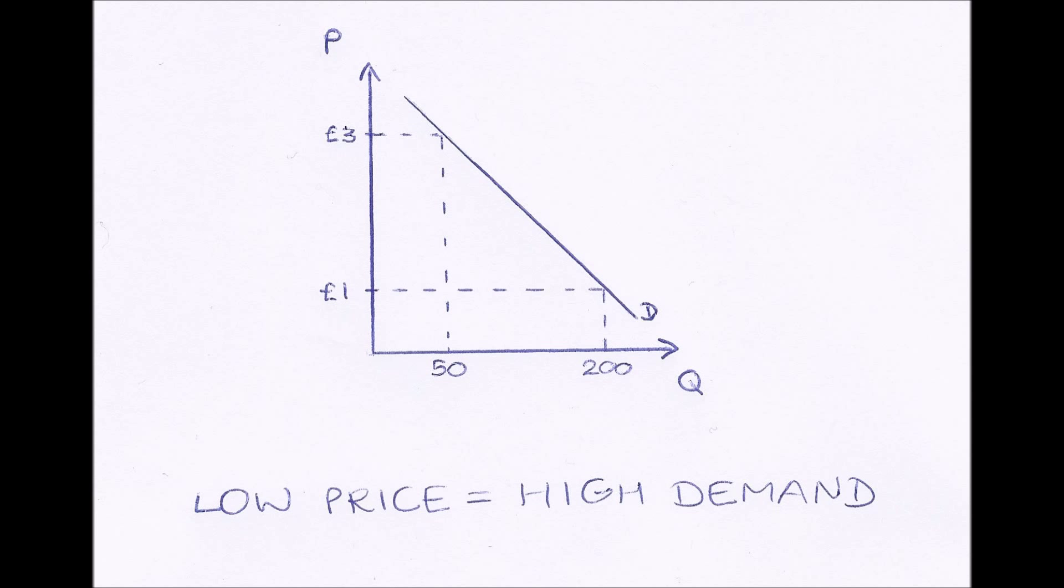However, if the price is high, this is a disincentive to buy that good. It is expensive, so this puts people off buying it. So therefore less people will buy it, so demand will be low. So therefore when the price is high, demand is low. And that is shown in the diagram as well. When the price is £3 and we draw across and draw down, demand is only 50.